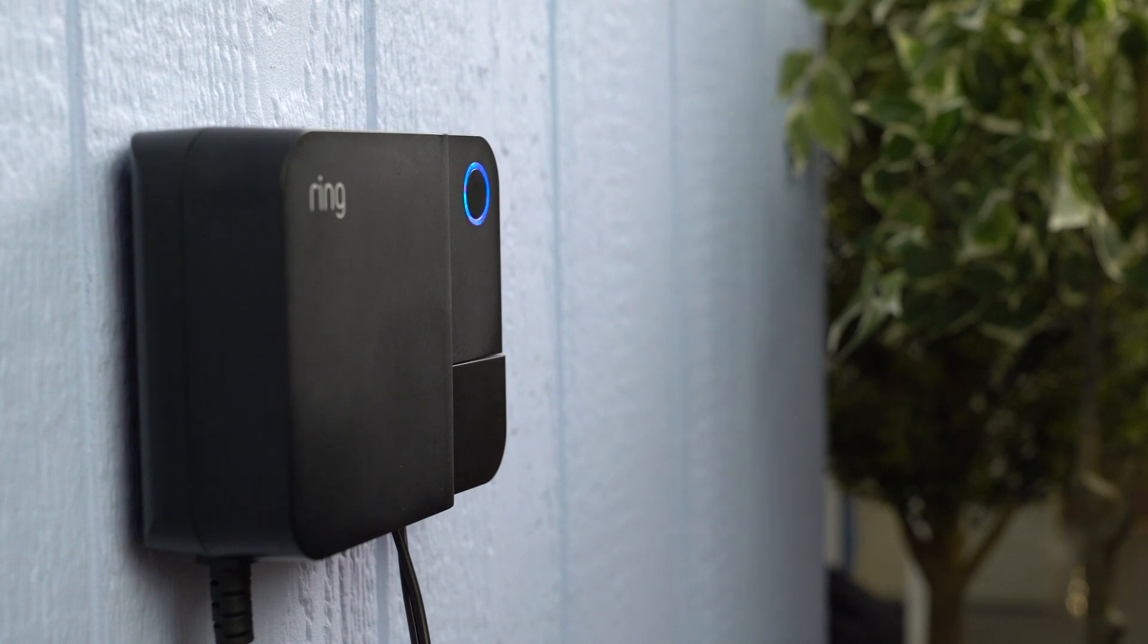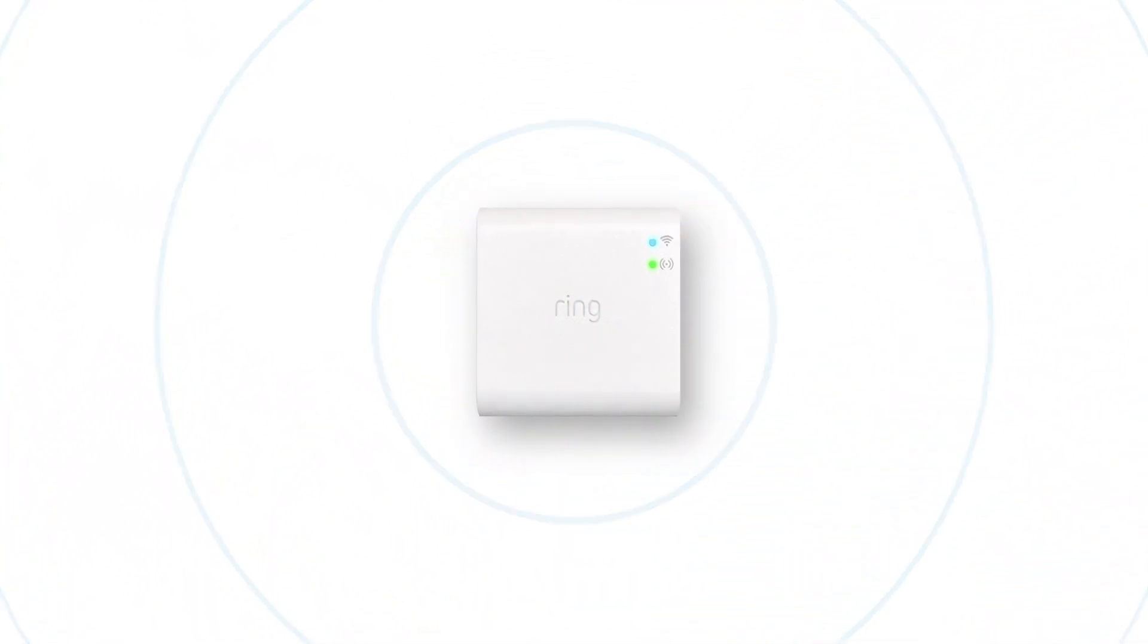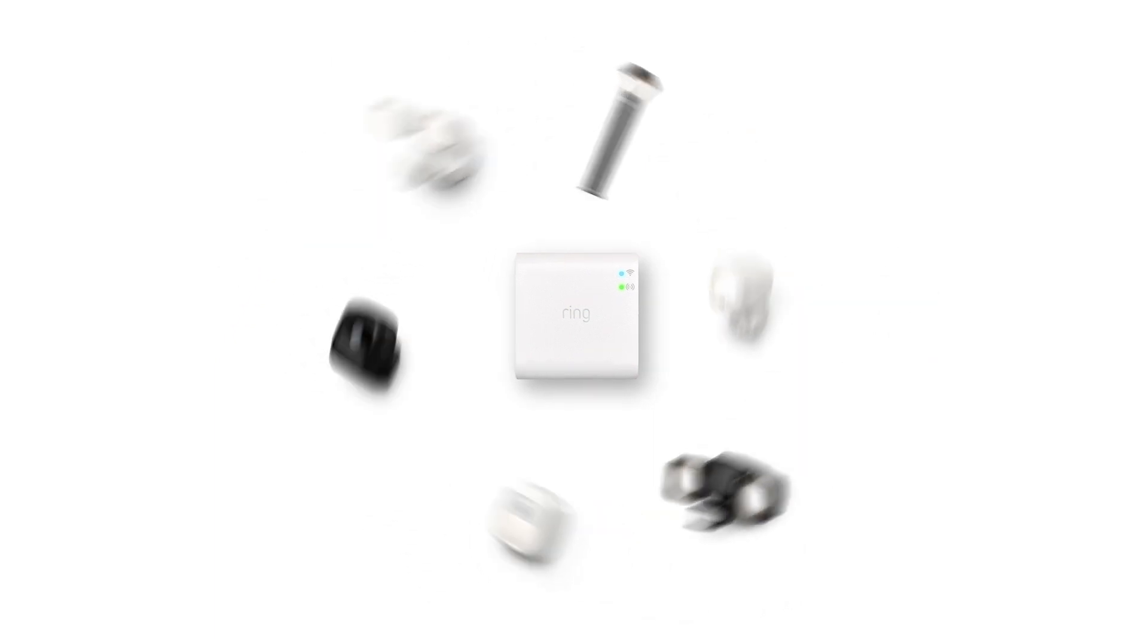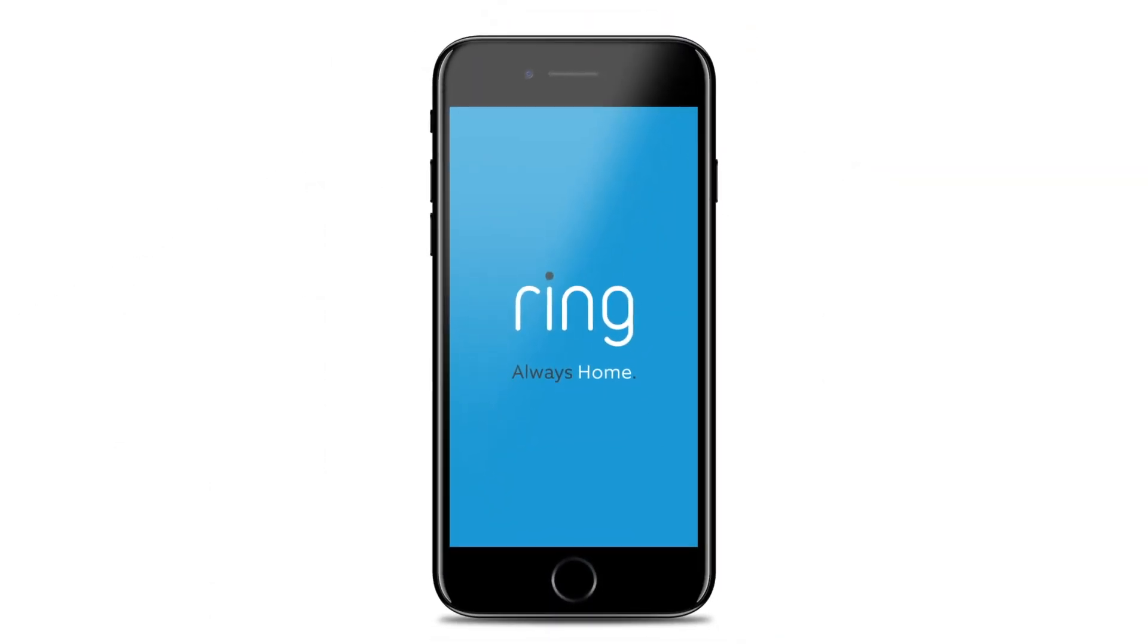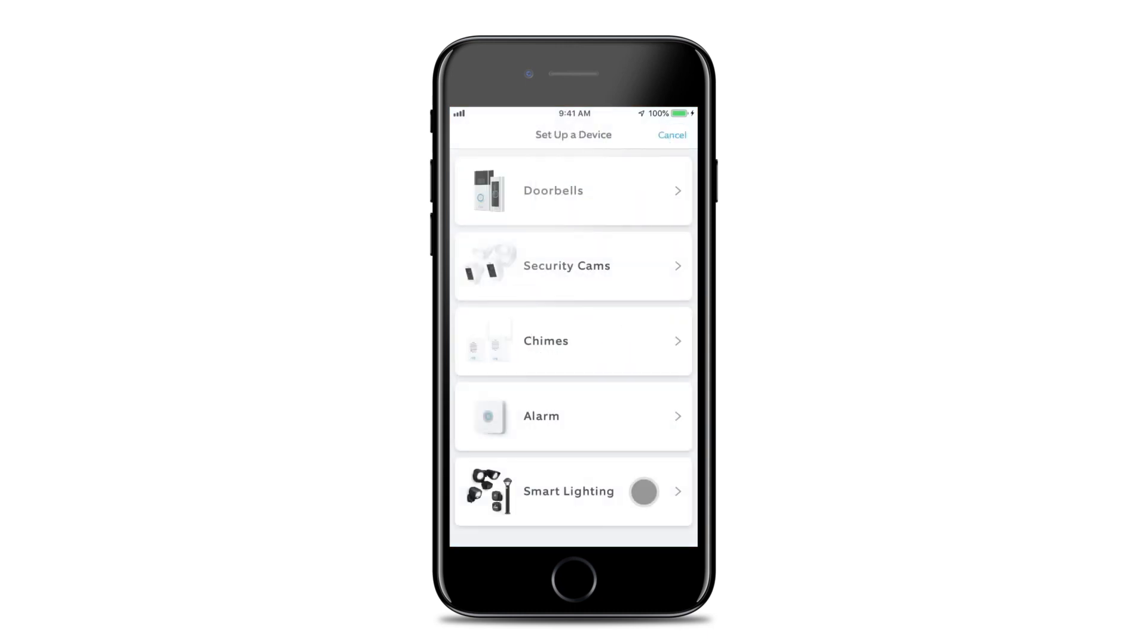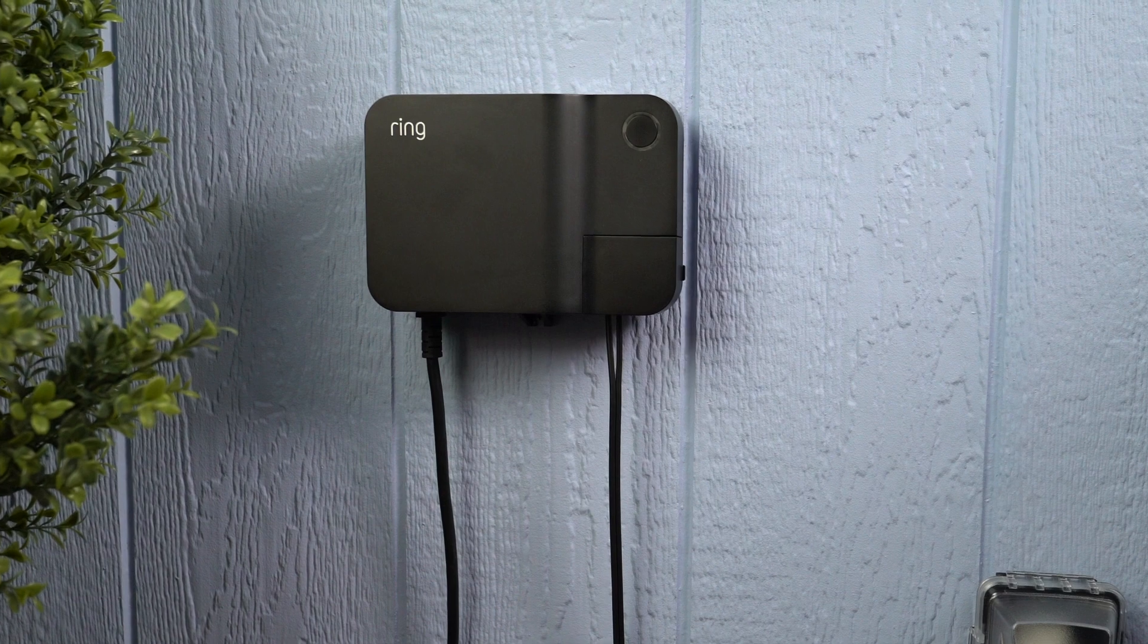A ring bridge is required for transformer to work with the rest of your ring system. Only one is needed per home. Be sure to set up your bridge in the ring app before continuing. To set up your transformer, open the ring app and tap set up a device, then choose smart lighting and follow the in-app instructions to complete setup. Then your transformer will be ready to use.